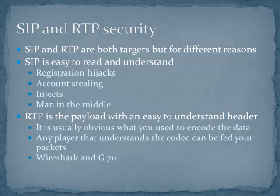RTP has a completely different problem. RTP is the transport protocol — you encode the audio or video with a particular codec and send it across. If you just had the raw data, you'd have no idea what it means. But RTP helpfully tells you exactly what codec was used, with G.711 being the most popular. That means anyone who understands that codec can be fed your packets and replay them. Both Wireshark and OmniPeak have the ability to play back G.711 streams. The basic problem with RTP is that you can collect packets and play them back, and you can also inject RTP packets into streams by matching the stream values and directing them at the destination IP address. But the most common problem is replay.